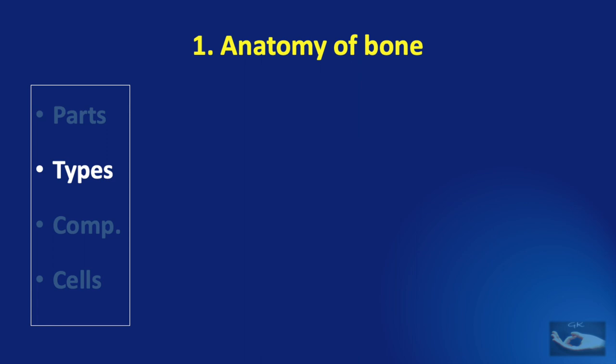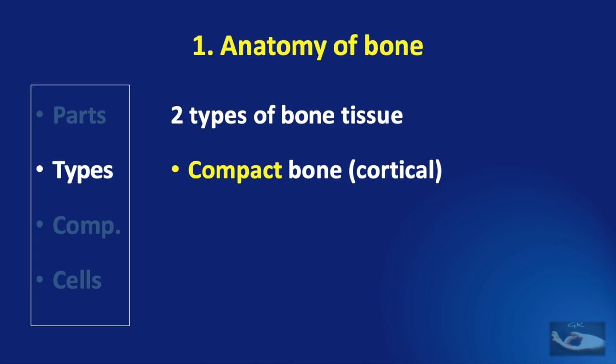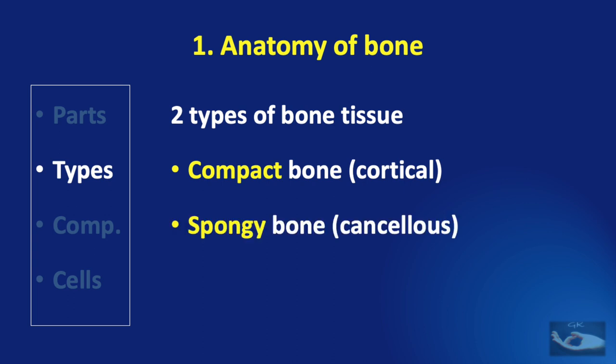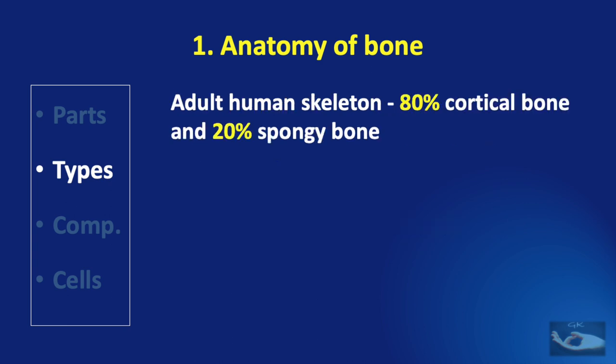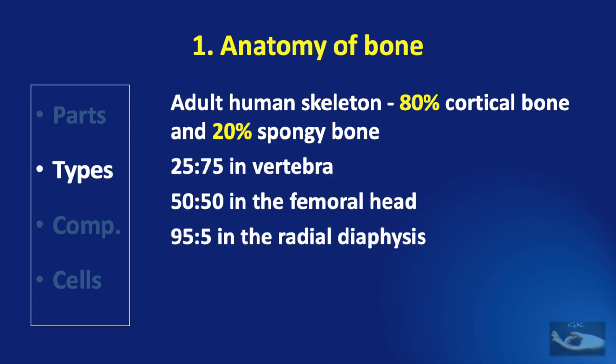Having seen the different parts of the gross anatomy of the bones, we shall now see the types of bone tissue. There are two basic types: compact bone, otherwise known as cortical bone, and spongy bone, otherwise known as cancellous bone. The adult human skeleton contains about 80% cortical bone and 20% spongy bone, present in different ratios in different bones. For example, the ratio of cortical to spongy bone is 25:75 in vertebra, 50:50 in the femoral head, and 95:5 in the radial diaphysis.